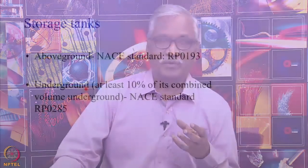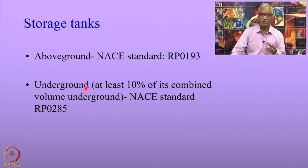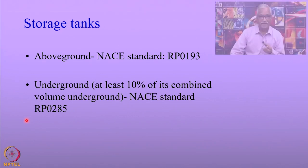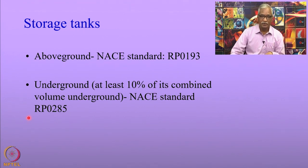The storage tanks, next only to pipelines in terms of the extent of cathodic protection applied, are classified into two categories: above ground storage tanks and those which lie underground.